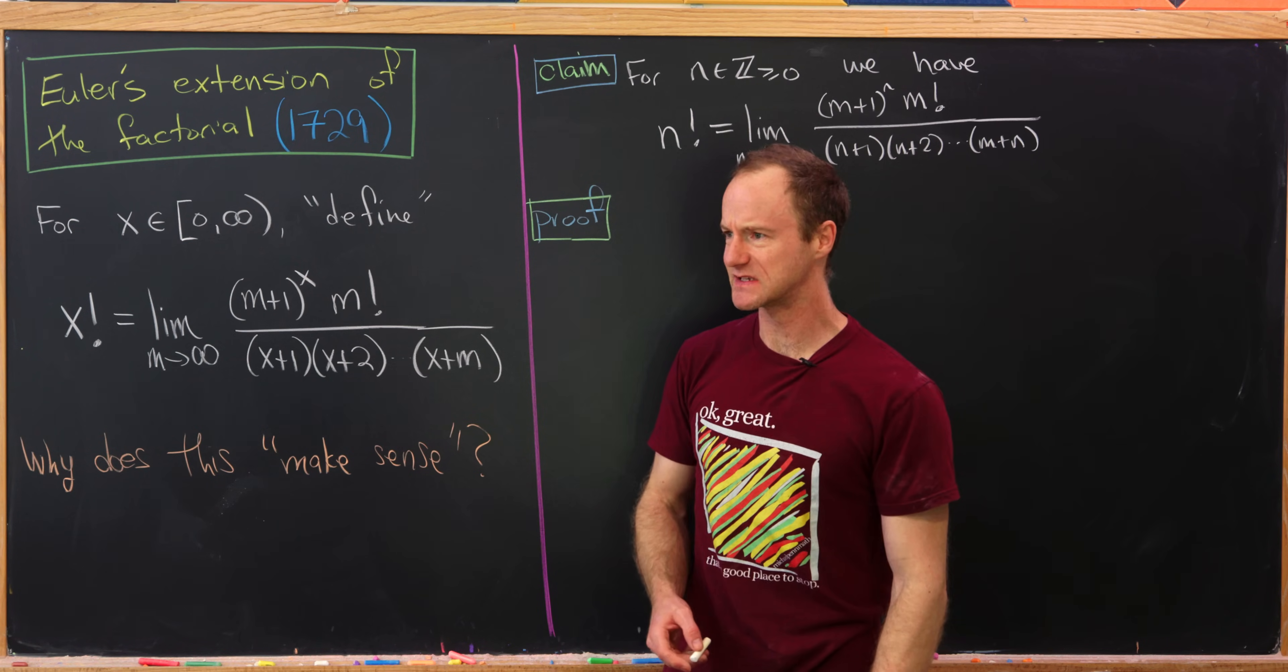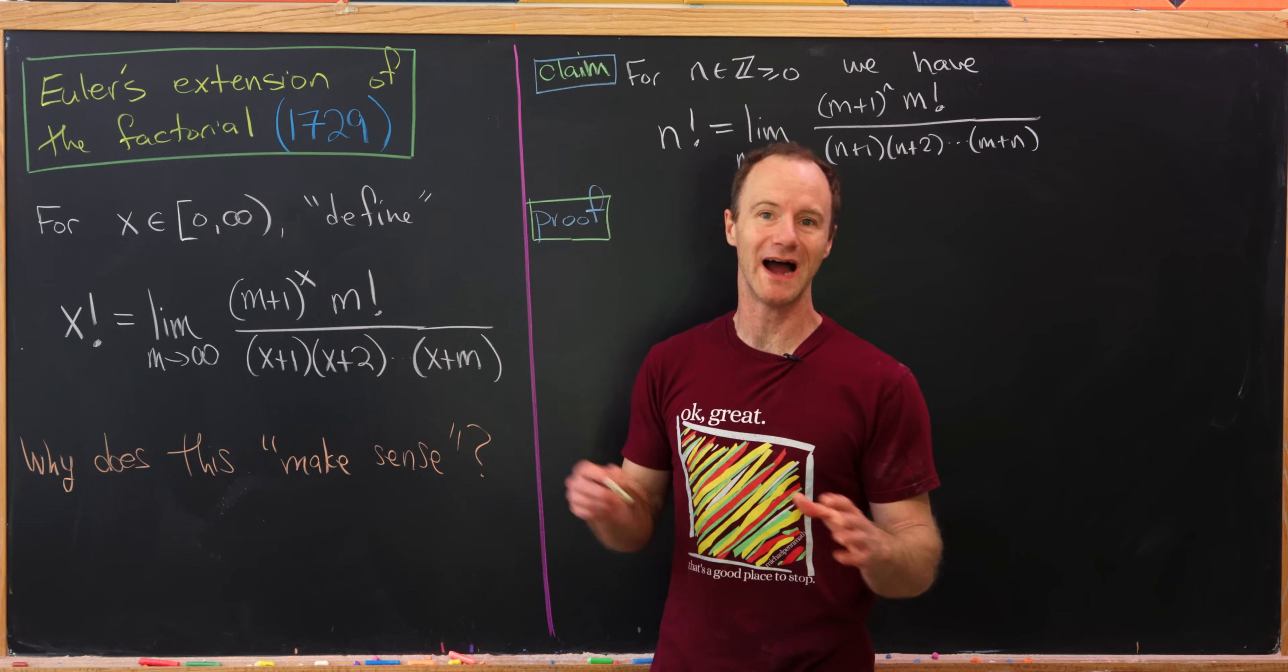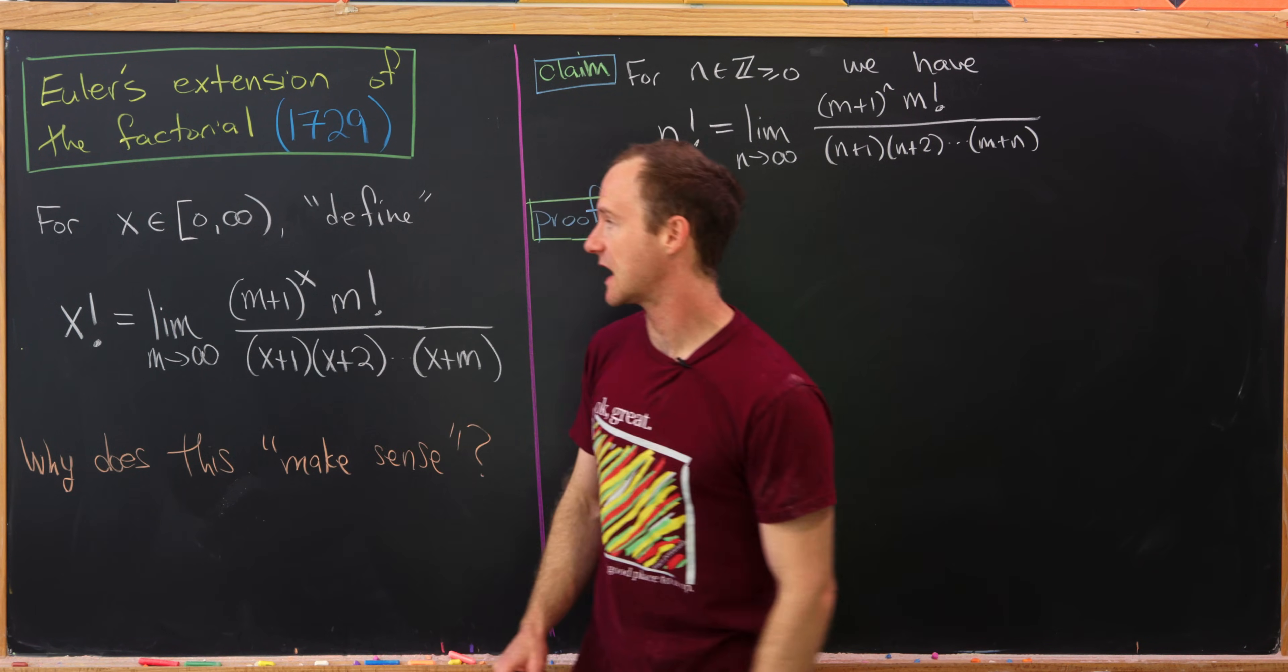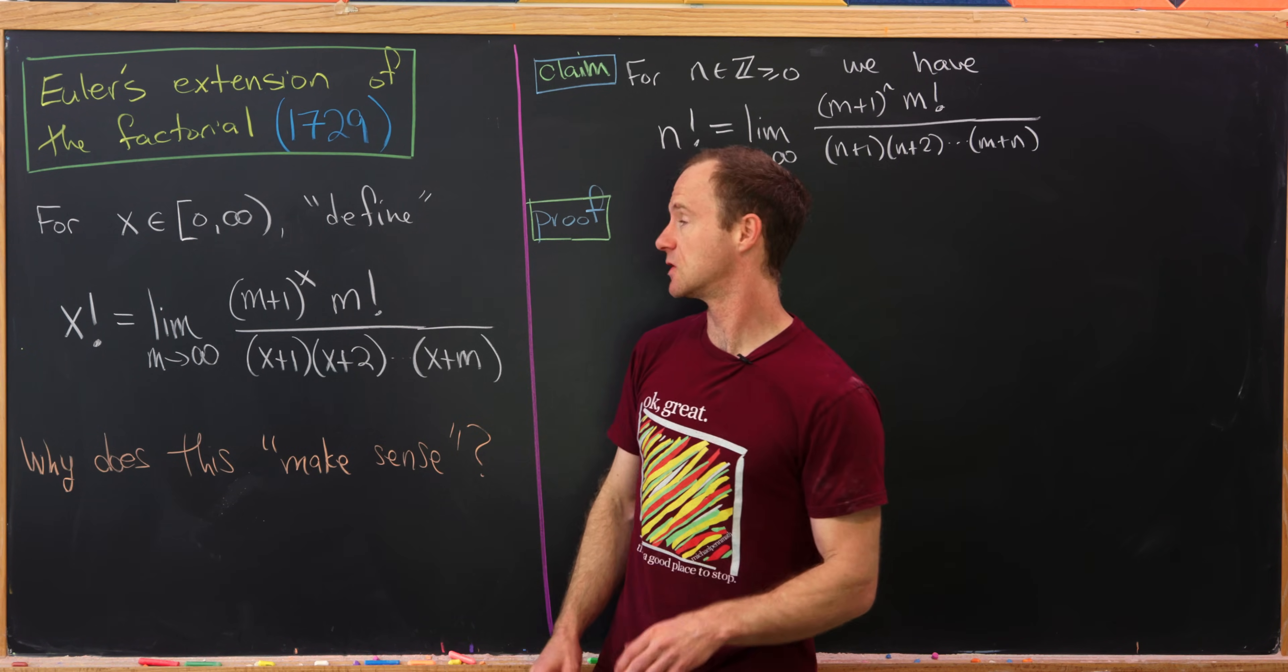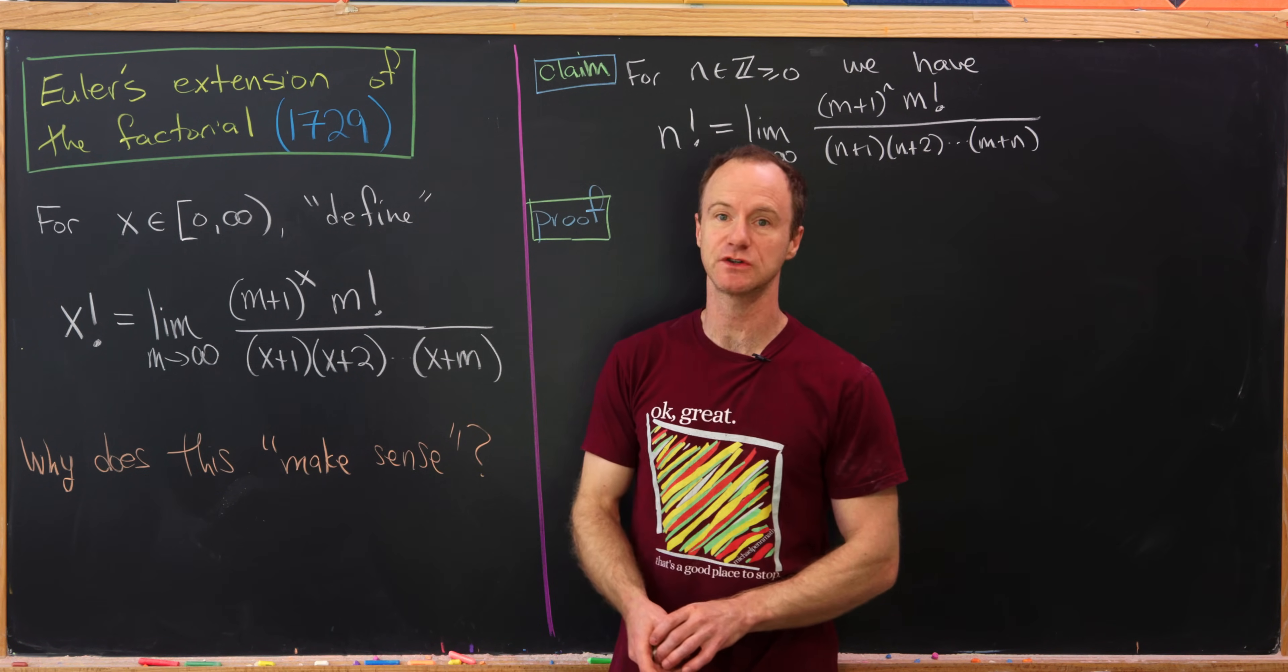So let's look at this extension and then we'll maybe look at the question why does this make sense. Okay, so for a non-negative real number x we'll define x factorial to be the limit as m goes to